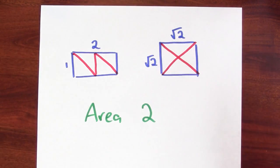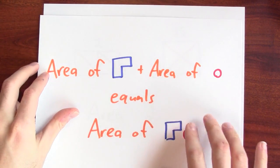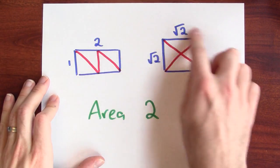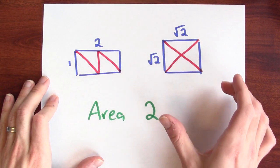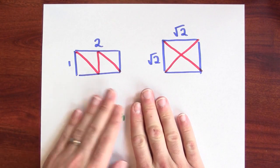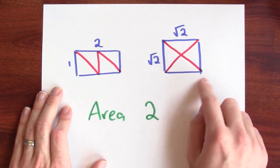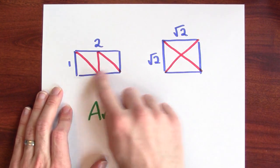So, I mean, very visibly, if you believe that areas add in this way, that I'm allowed to rearrange pieces, then you might believe that these two things have the same area, regardless of whether you do the calculation or not. These two pieces have the same area, because I can take this thing and cut it up and get this thing.